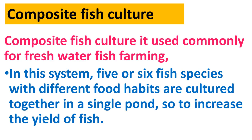In the composite fish culture system, five or six fish species with different food habits are cultured together in a single pond so as to increase the yield of fishes. Different species of fish have different food habits, and they are cultured together in a single pond to increase fish yield. This type of system is called composite fish culture.